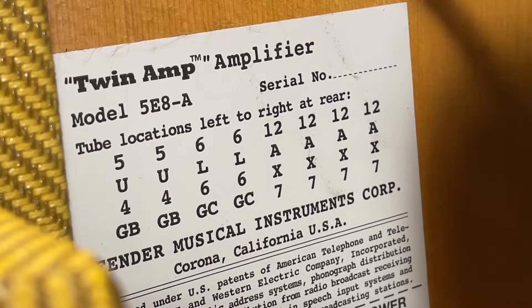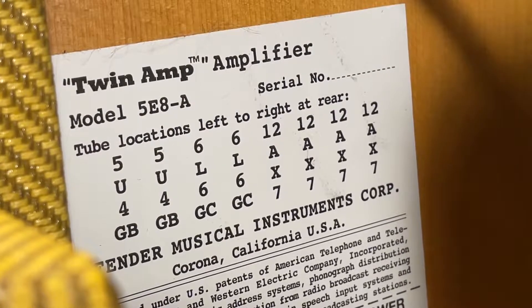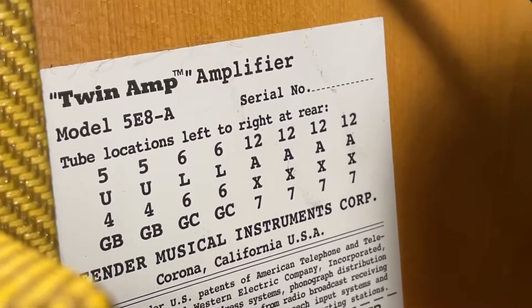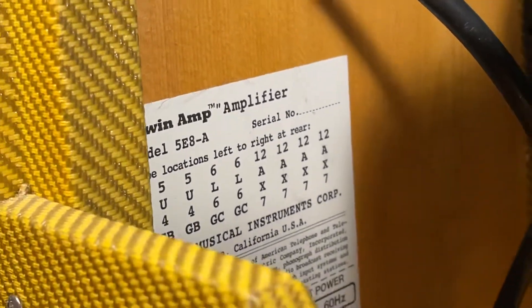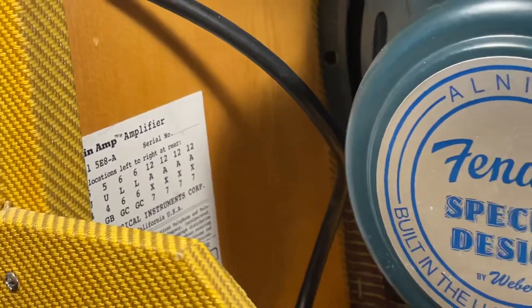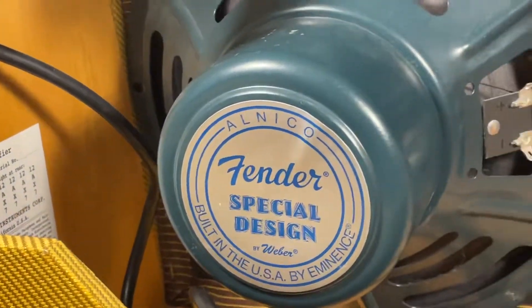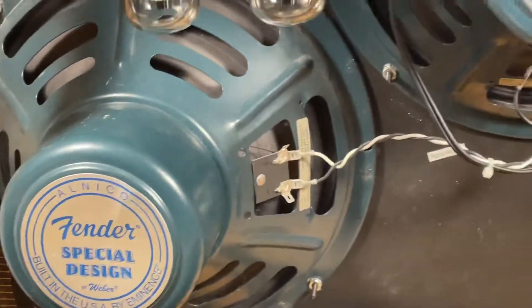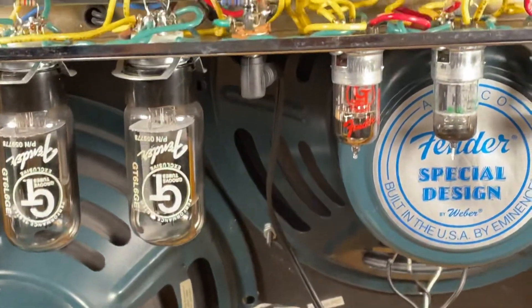Here's a Fender 57 twin or low-powered tweed twin reissue. It's working well, it's quiet, sounds good, no obvious issues. Just want to take a few minutes to inspect the circuit and see if anything needs attention.